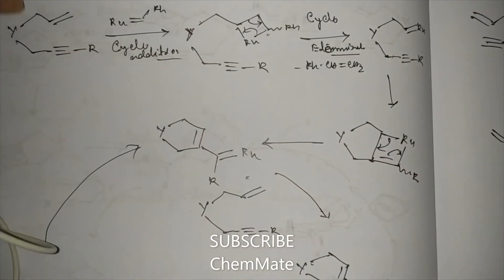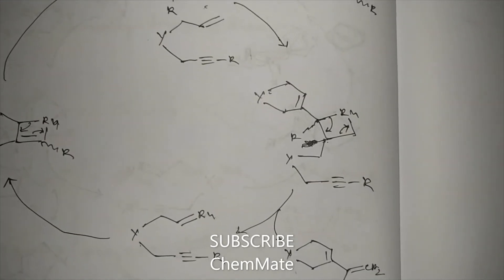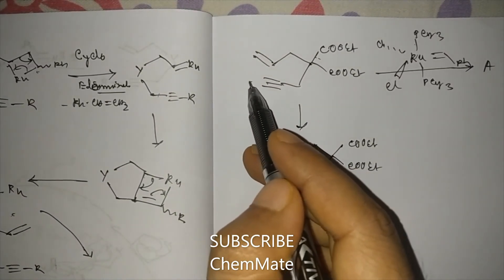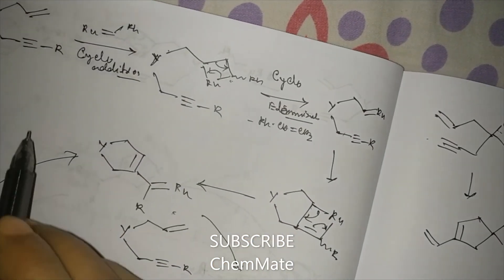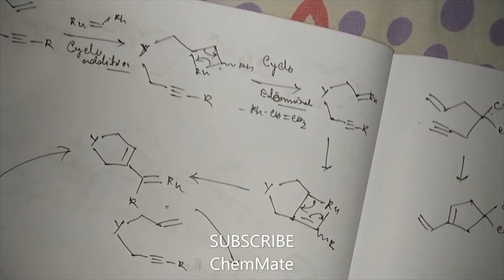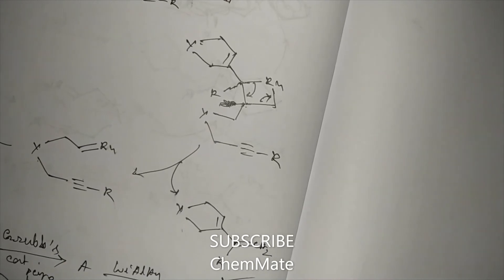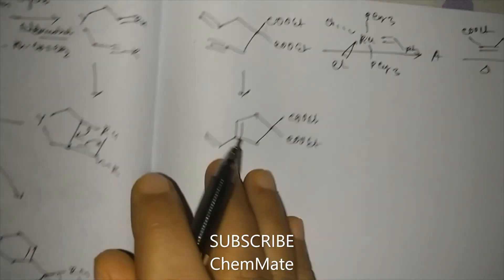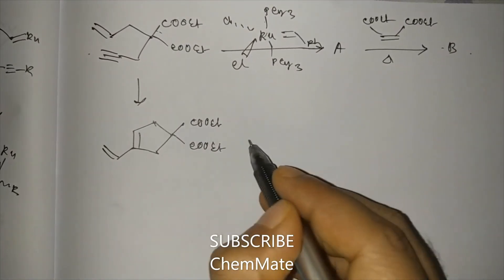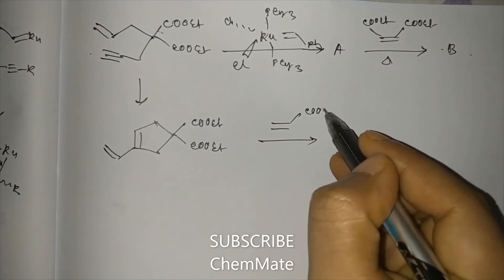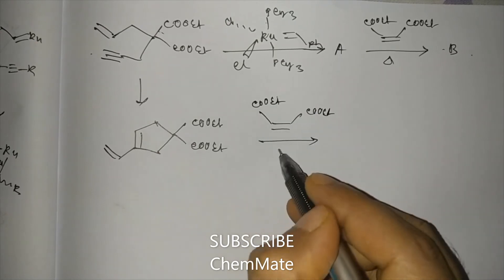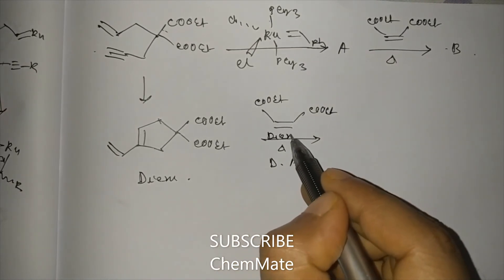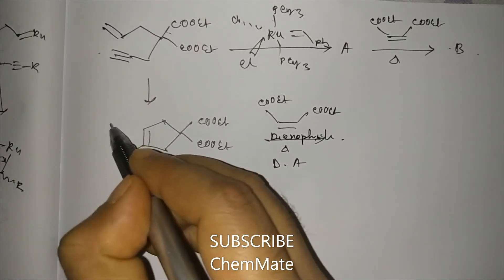We draw the mechanism here. From this reaction, we get the product. The only changes are that R is replaced by one hydrogen here and R is replaced by one hydrogen here. So the product will be the same five-member ring — a five-member ring will be formed with CH2. So this will be product A. Now, if it is treated with that diester, a Diels-Alder reaction will take place. This is now a diene and that is a dienophile.